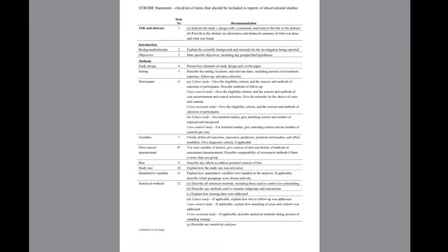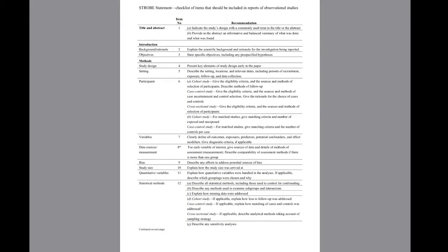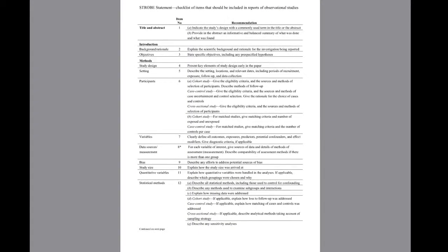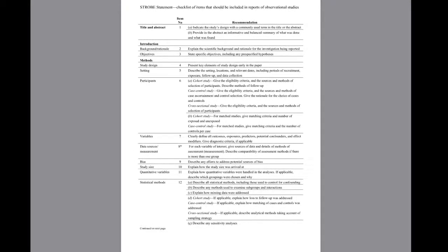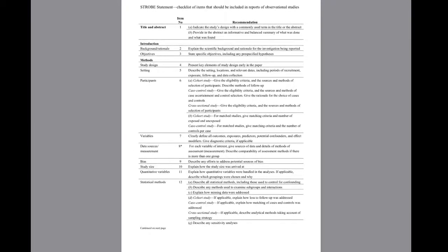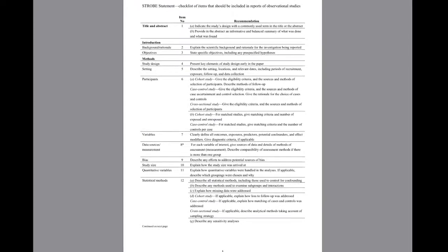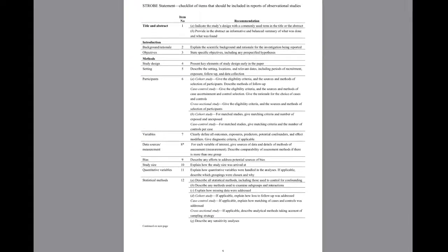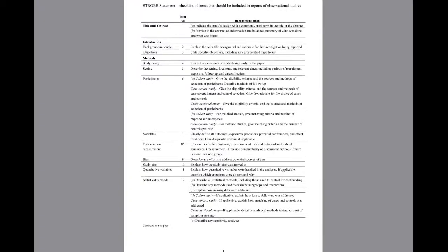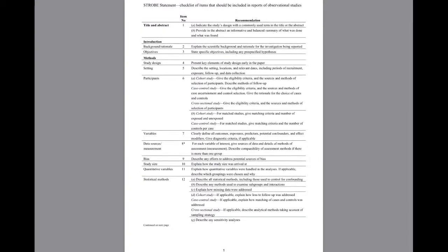STROBE statement checklists include individual checklists for three types of observational studies: cohort, case-control, and cross-sectional studies. Or you can use the combined checklist for all observational studies, with sections broken down individually where they differ.